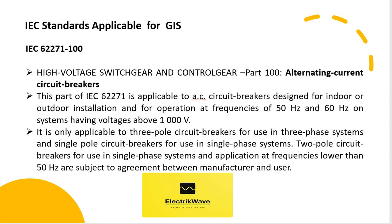IEC 62271-100: High Voltage Switchgear and Control Gear, Part 100, Alternating Current Circuit Breakers. This part of IEC 62271 is applicable to AC circuit breakers designed for indoor or outdoor installation and for operation at frequencies of 50 Hz and 60 Hz on systems having voltages above 1000 V. It is only applicable to 3-pole circuit breakers for use in 3-phase systems and single-pole circuit breakers for use in single-phase systems. 2-pole circuit breakers for use in single-phase systems and application at frequencies lower than 50 Hz are subject to agreement between manufacturer and user.